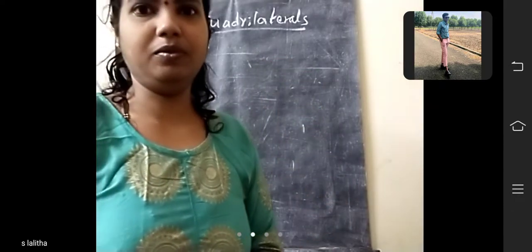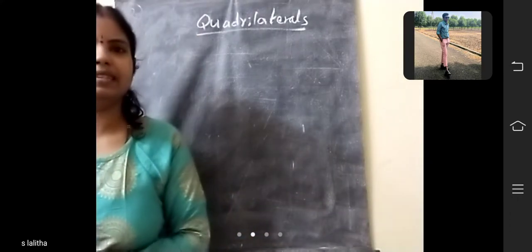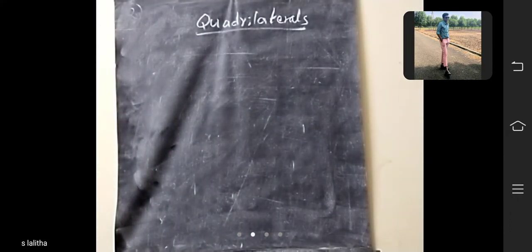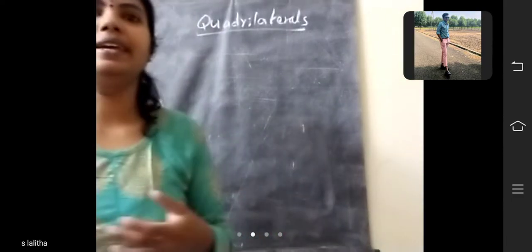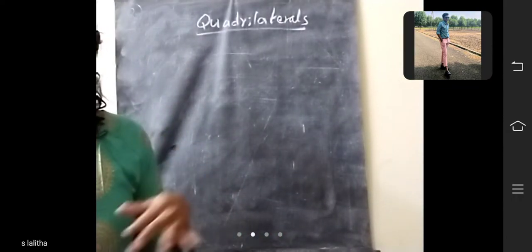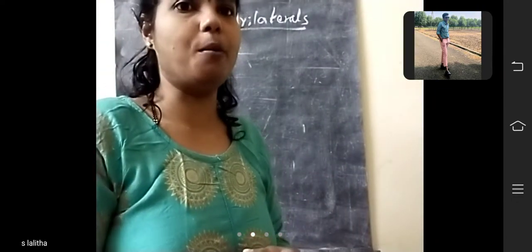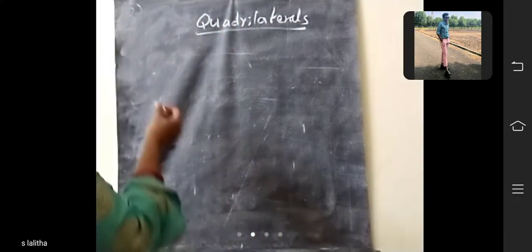What is called quadrilaterals? Already you learned in the previous classes. It is a closed figure formed by 4 line segments. Quadrilaterals is a closed figure formed by 4 line segments.